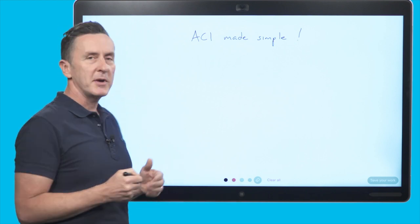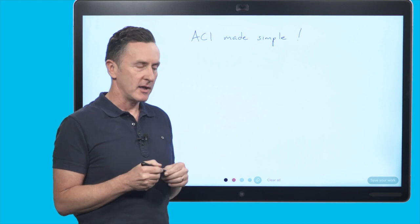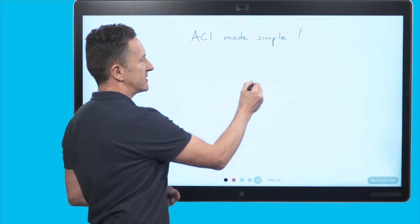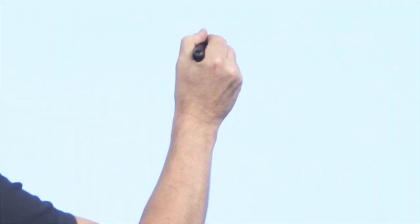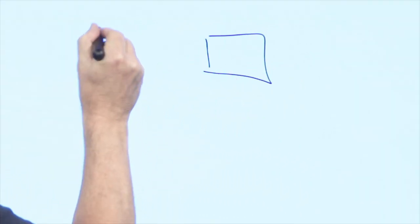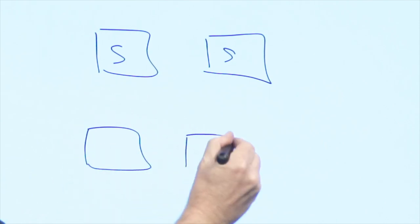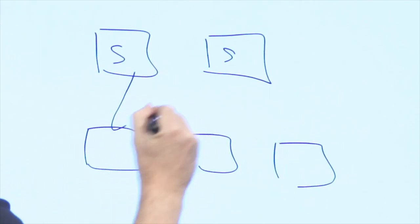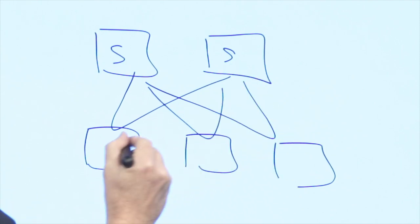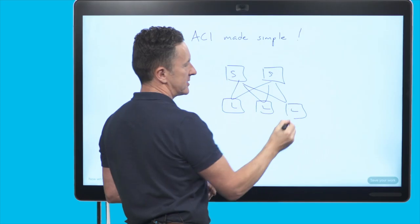So when we start to build out a network, an ACI fabric, the first thing we need to do is consider the topology of the switches. So we have our spine switches and we have our leaf switches. The actual build out of the network is extremely simple. It's a two-tier architecture.